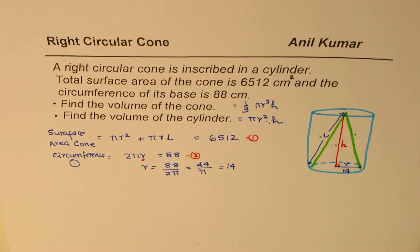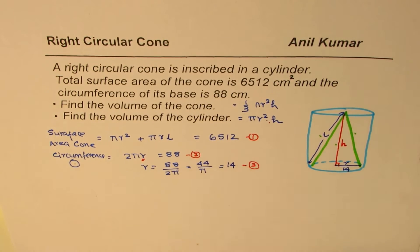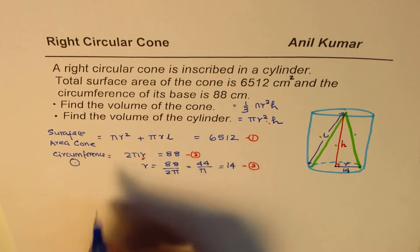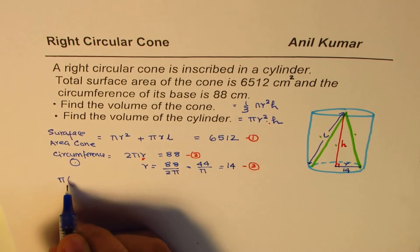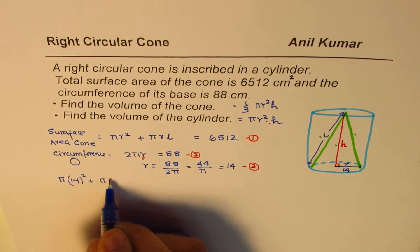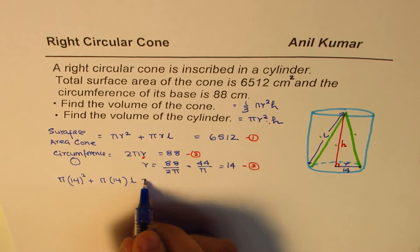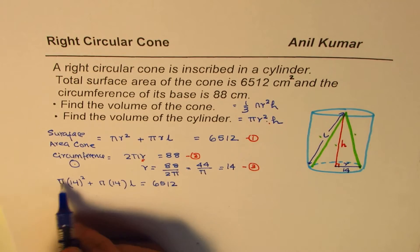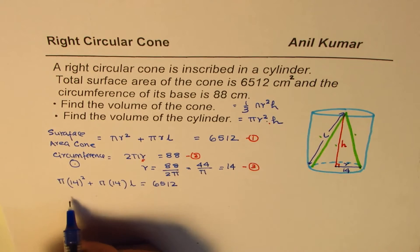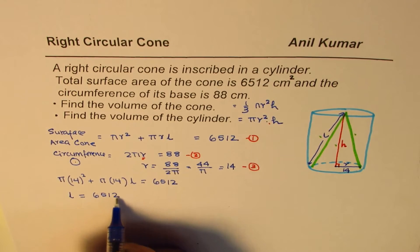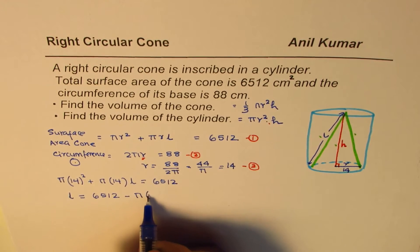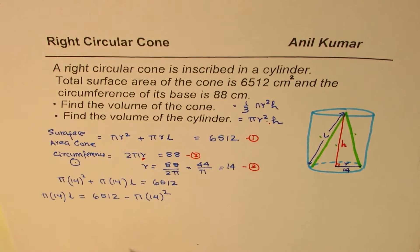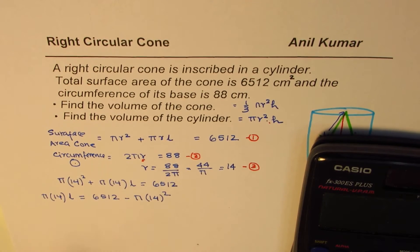Now we substitute this value of radius into equation 1. We have π r² + π r l = 6512, with r = 14. So: π(14)² + π(14) l = 6512. The only unknown is the slant height l. We isolate l: l = (6512 − π × 14²) ÷ (π × 14).